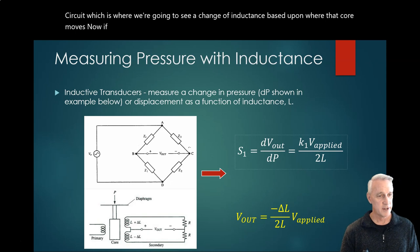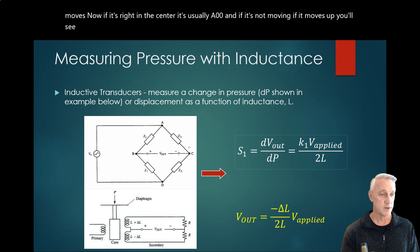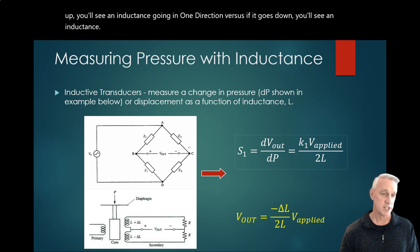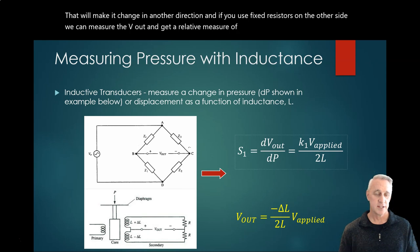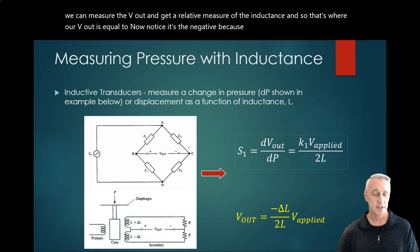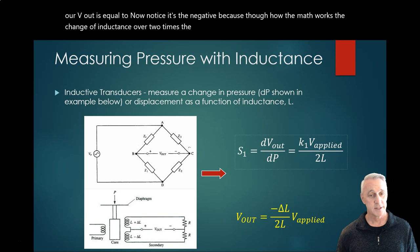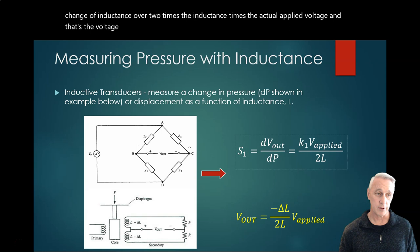Now if it's right in the center, it's usually zero. If it moves up, you'll see an inductance going in one direction; if it goes down, you'll see it change in another direction. If you use fixed resistors on the other side, we can measure the Vout and get a relative measure of the inductance. That's where our Vout is equal to—notice it's negative because of how the math works—the change of inductance over two times the inductance times the actual applied voltage, which is the voltage applied on the primary coil.